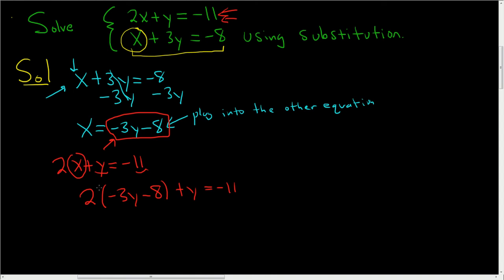Let's carefully distribute everything. So 2 times negative 3y is negative 6y. 2 times negative 8 is negative 16, plus y equals negative 11.